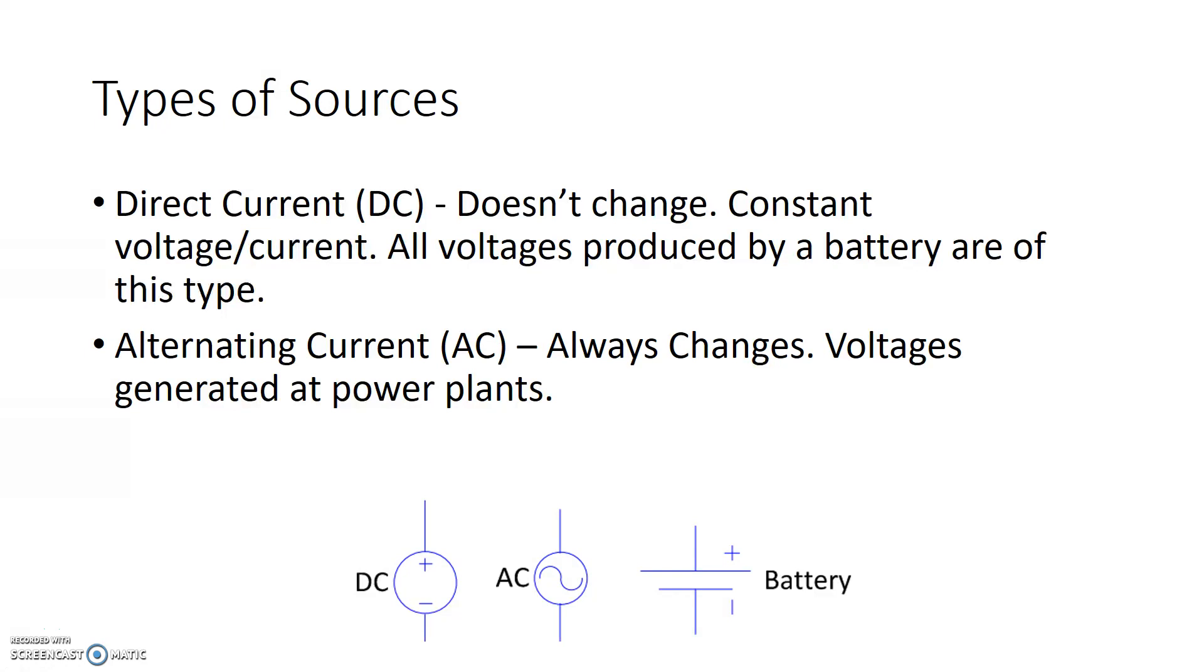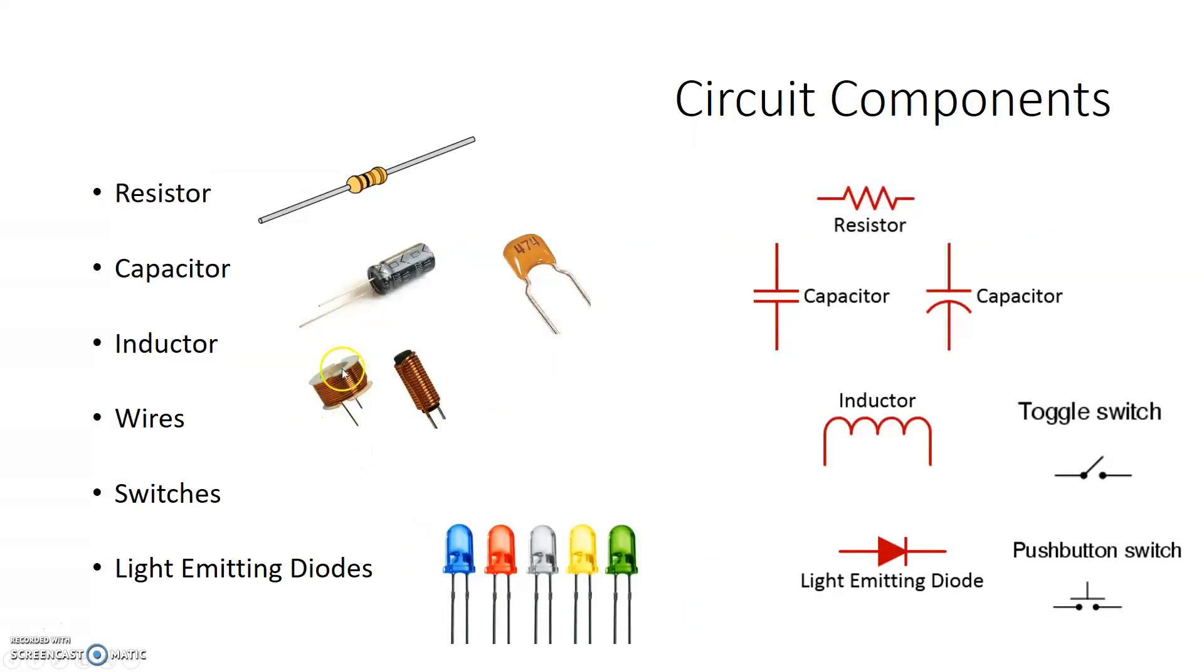Besides sources, there are electrical components called loads, and here are examples of some loads. A resistor, which is pictured here. A capacitor, pictured here with electrical schematics right here, shown as two parallel plates, that's what a capacitor is. Inductor, shown here in a picture, and here as a symbol. Inductor is basically a coil wrapped around a core, so that's what the symbol is showing.